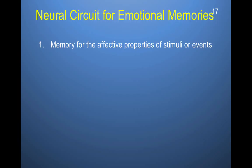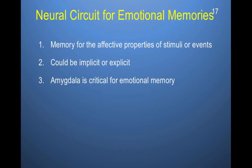We have different neural circuits for emotional memories. Emotional memories are quite special because of the affective properties of stimuli and events. They can be implicit or explicit, and the amygdala is critical for emotional memory. Classical conditioning, for example, can have implicit components where the body learns without conscious awareness, but it can also have explicit components.